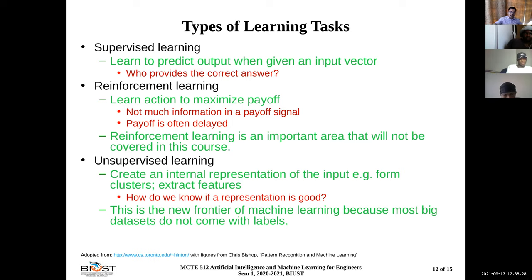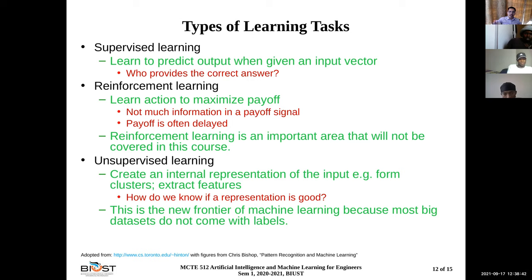So that's unsupervised learning. We don't say if you give this answer you're addicted, if you don't give this answer you're not. There's no such thing. We just group the trend of the answers. If the answers follow a particular trend, they belong to a certain group; if the answers follow another trend, they belong to another. It is more about the relationship of the data.